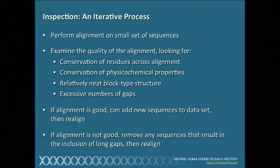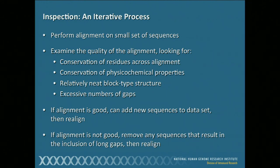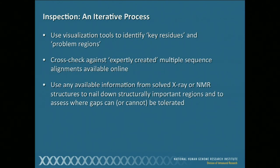If the alignment looks good, add new sequences and realign. If it's not looking good, remove any sequences that result in long gaps, then realign. Start with a subset and build out from there — you get much better alignments that way. There are visualization tools available that can help you identify key residues and problem regions, and we'll see an example at the end of today's lecture. Cross-check against expertly created multiple sequence alignments — we've seen several places to find those this morning — and use as much structural information as you can.